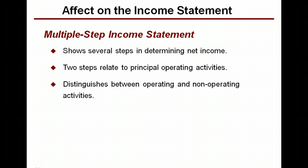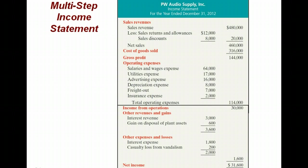Two of those steps relate to principal operating activities, and this statement really distinguishes between income from operations and non-operating activities. It takes the position that you're in business to sell some kind of product, and it would be nice to highlight how much you made from selling the product, putting anything peripheral underneath. Here's a multi-step income statement for PW Audio Supply for the year ended December 31st, 2012.